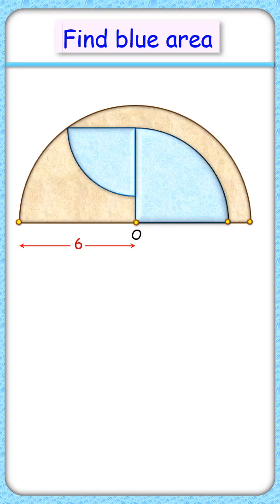Can you find the total area of these two blue quadrants? We are given a semicircle with radius 6 cm and center O. Let's check the solution and make an excellent observation.